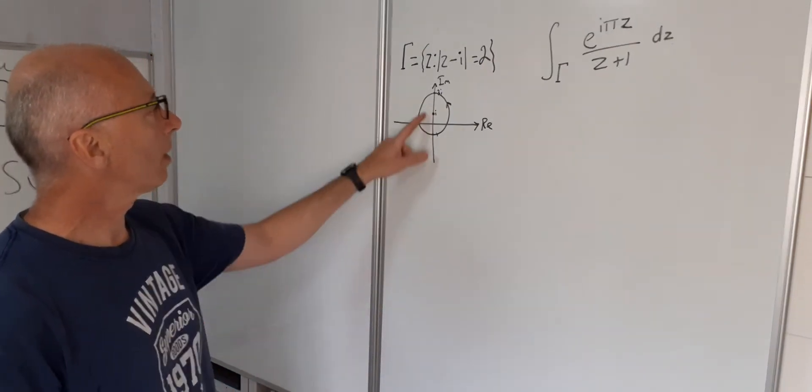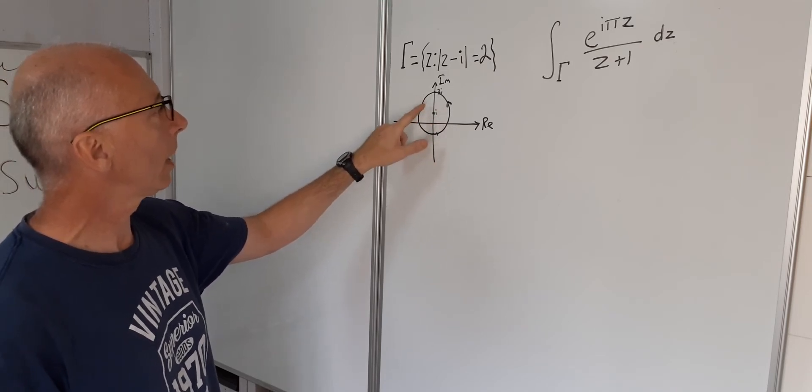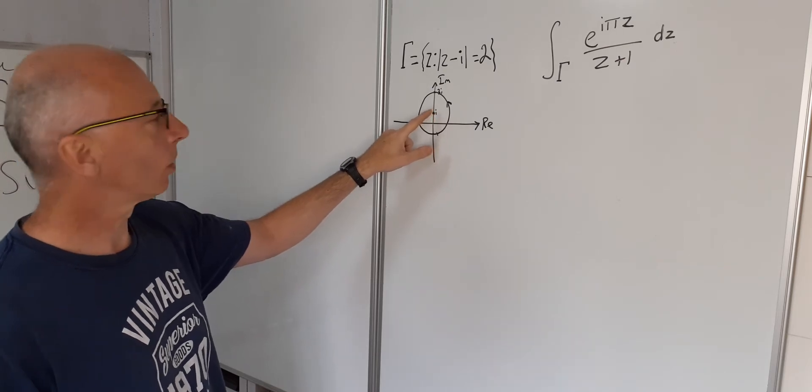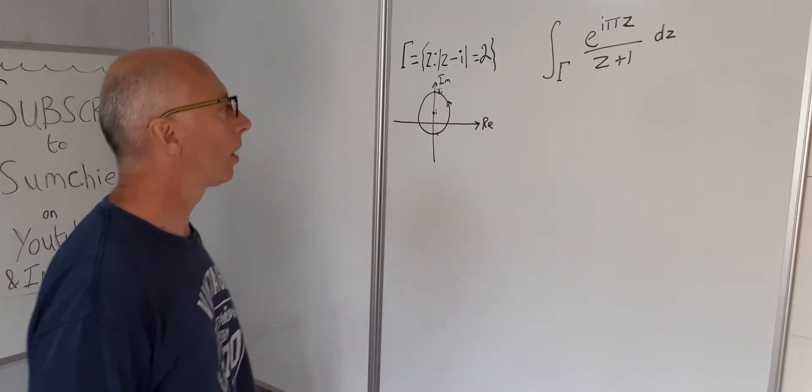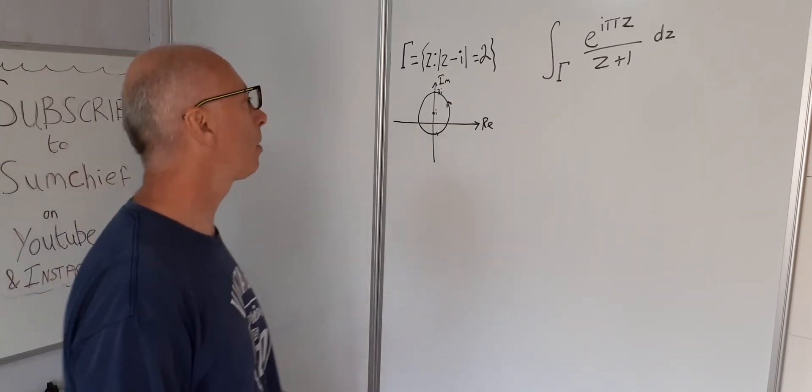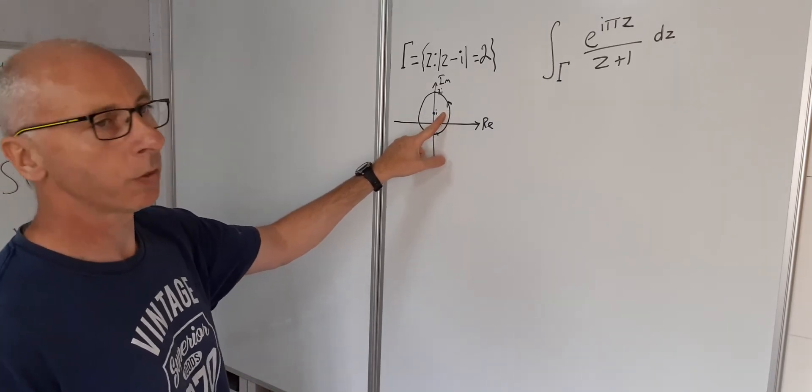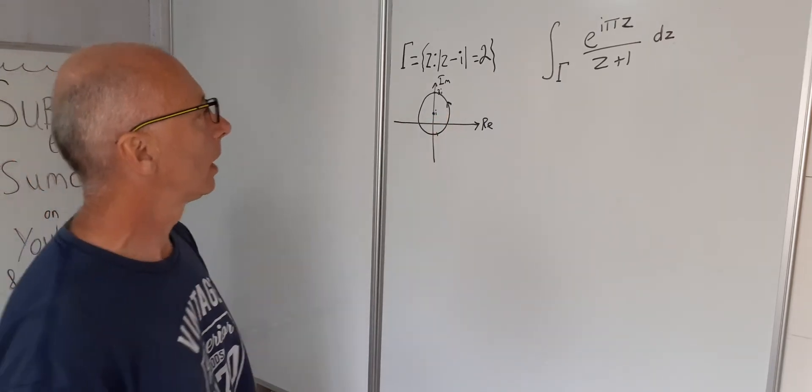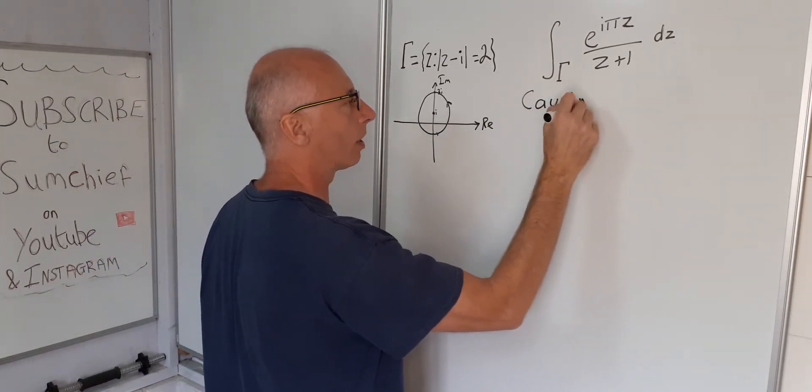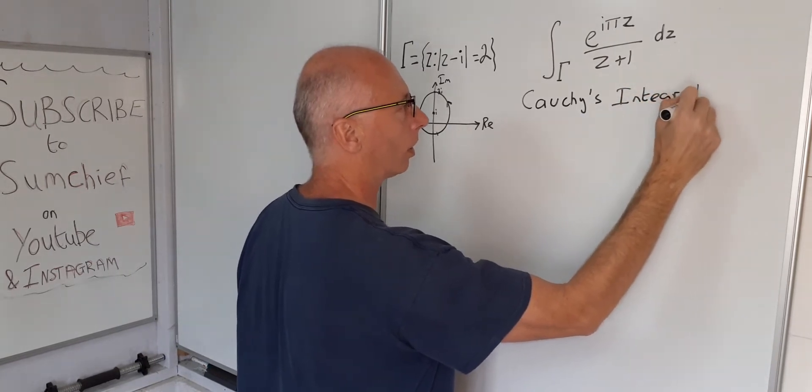So what we can say is that this gamma here is a simple closed contour on the complex plane and the complex plane is a simply connected region. So this is something where we can use Cauchy's integral formula. So just write this here for us, Cauchy's integral formula.